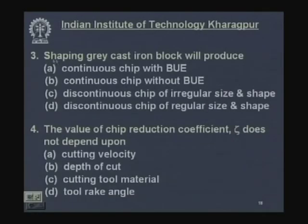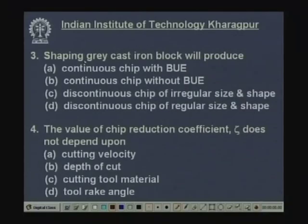Quiz question 3: In a shaping machine, machining a gray cast iron block will produce — continuous chip with BUE, continuous chip without BUE, discontinuous chip of irregular size and shape, or discontinuous chip of regular size and shape? Since gray cast iron is a brittle material, it will produce discontinuous chips of irregular size and shape. The correct answer is C.